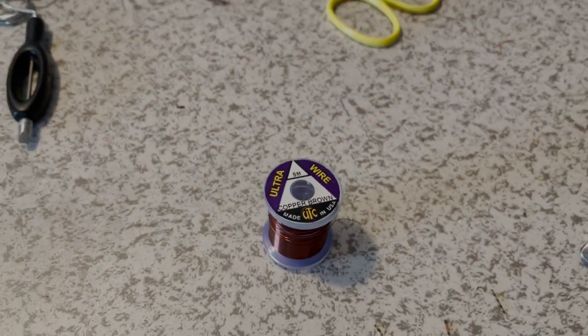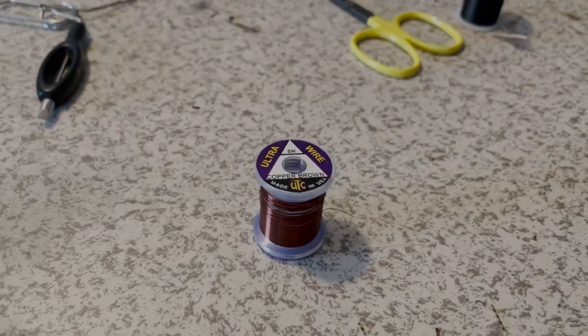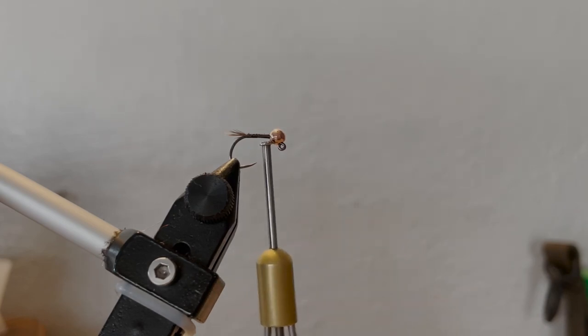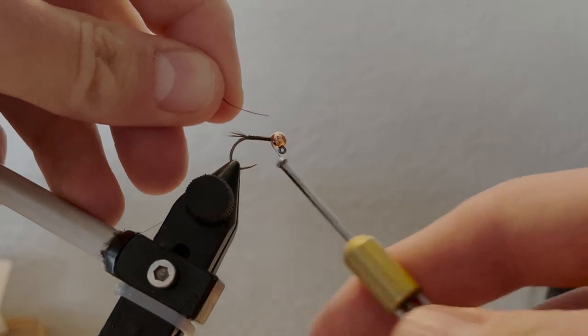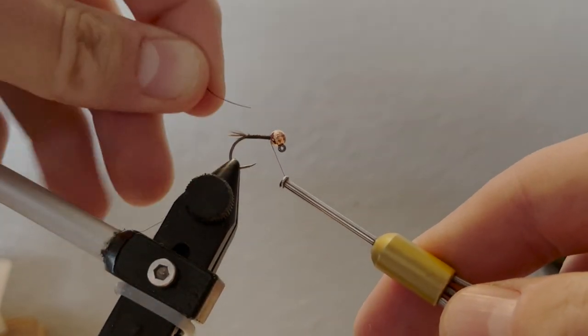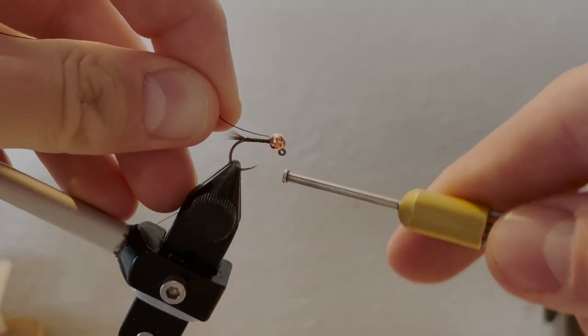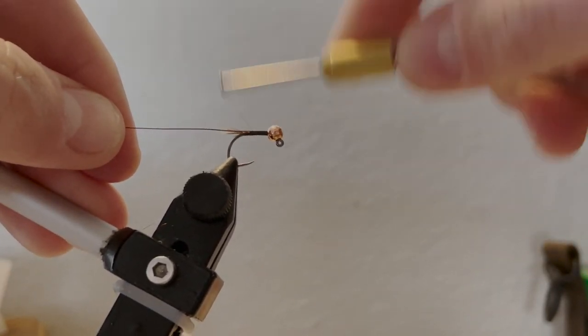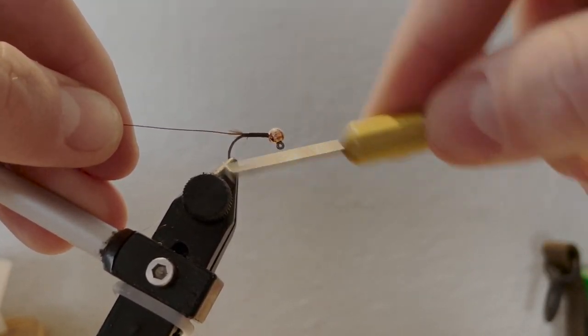Next we'll grab some ultra wire in small copper brown. Break off a four-inch section or so. Insert the tip of the wire into the bead—that will help lock the bead in place. Wrap back down to the start of your tail and keep your thread there.